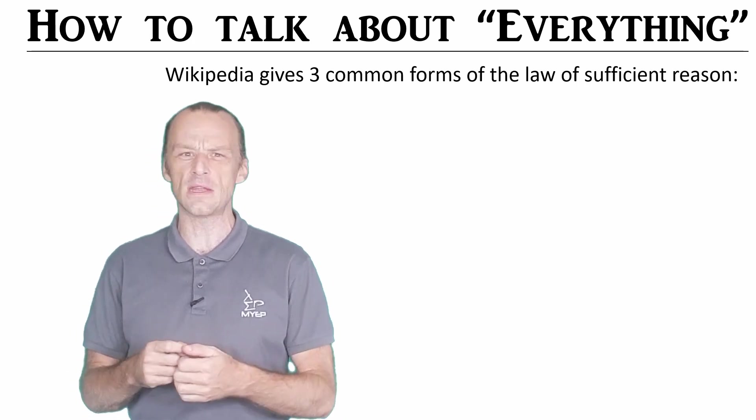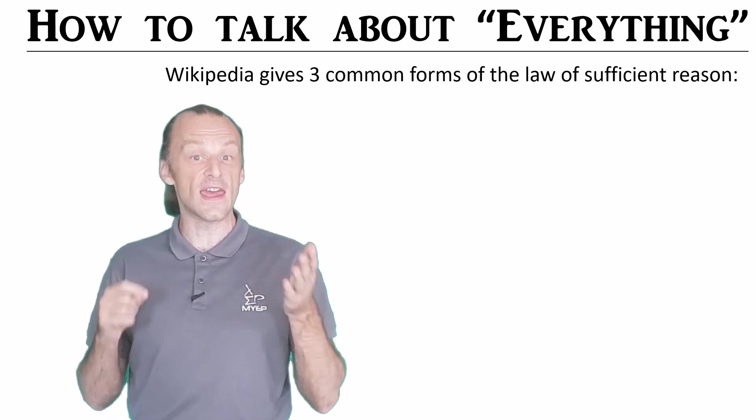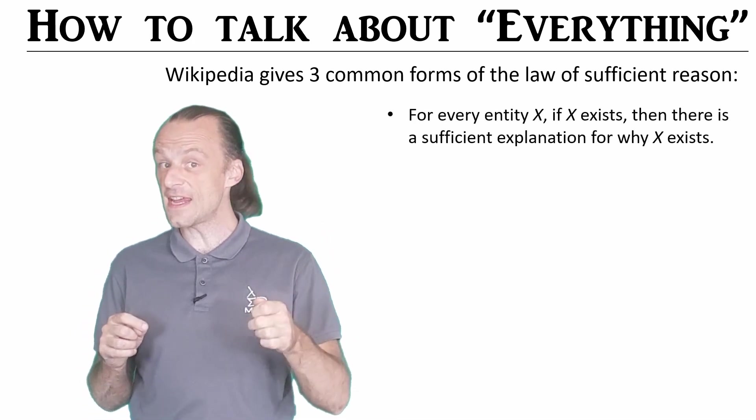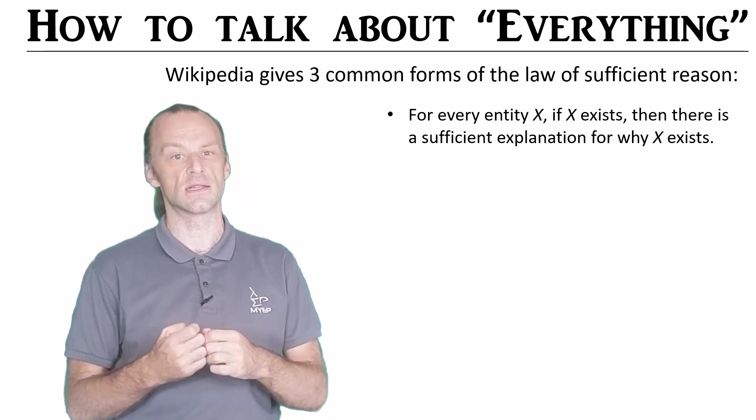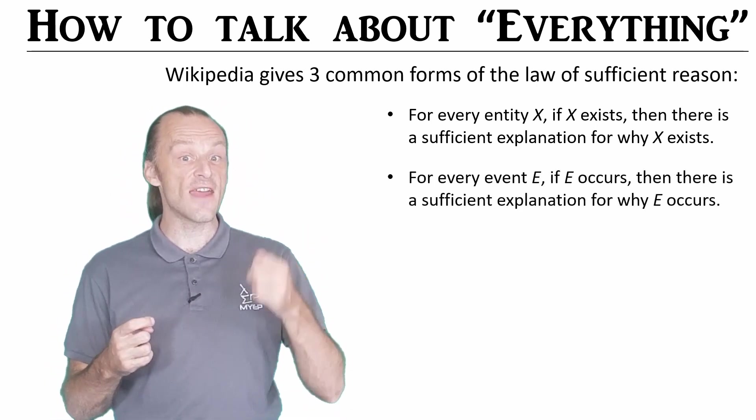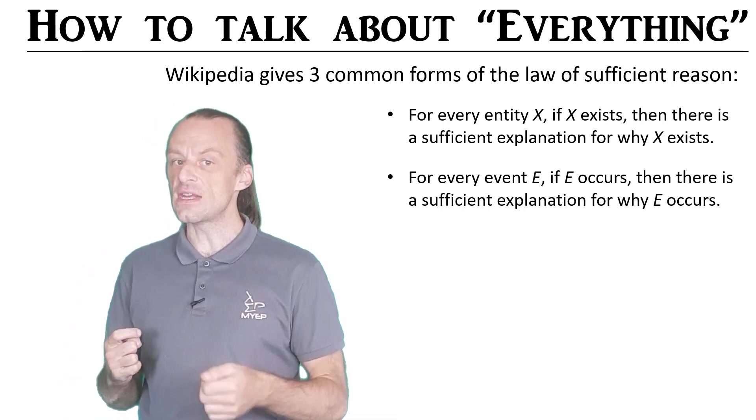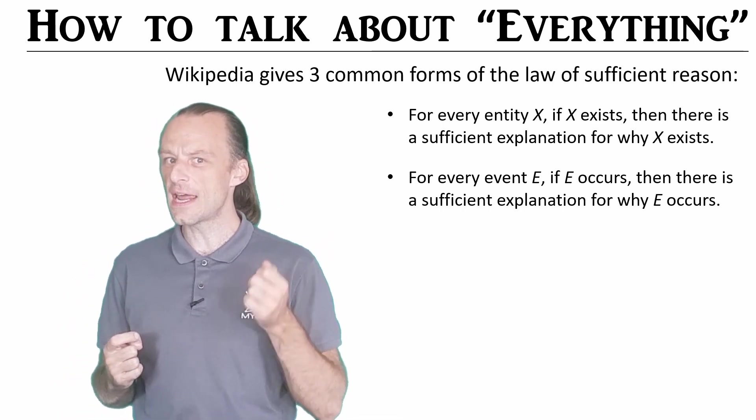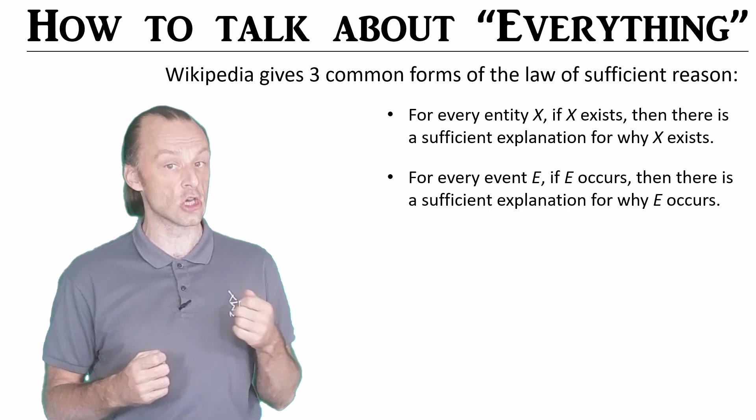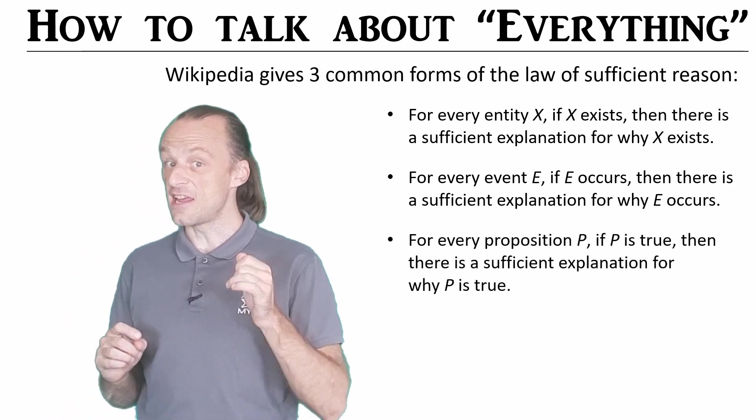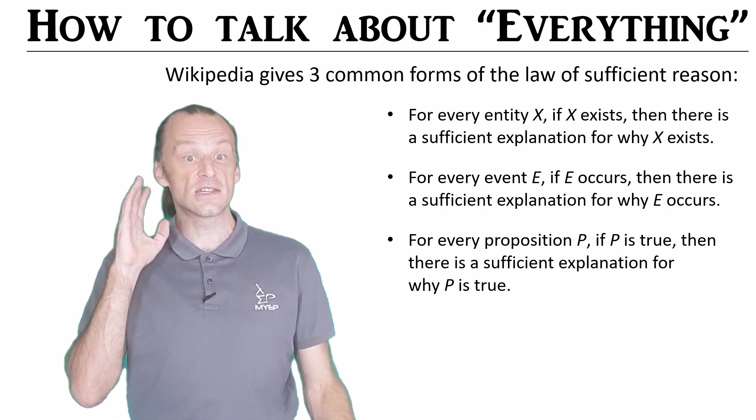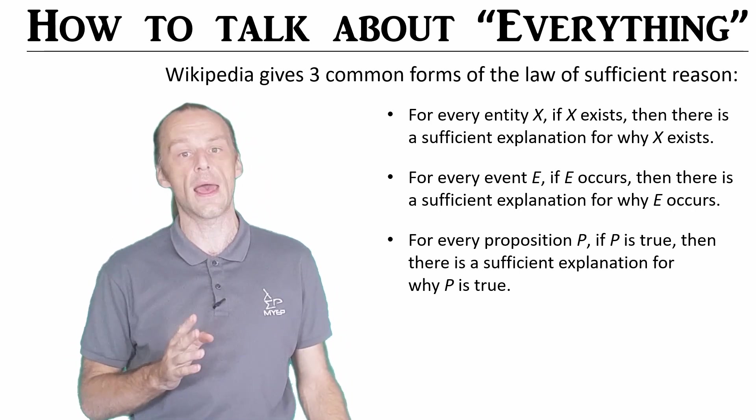If you look at Wikipedia, you can see three different forms of the principle of sufficient reason, but they kind of repeat themselves. The first says for every entity x, if x exists, there's a sufficient explanation for why x exists. The second says for every event e, if e occurs, there's a sufficient explanation for why e occurs. And the third says for every proposition p, if p is true, then there's a sufficient explanation for why p is true.